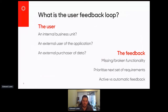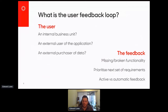So it's very important to identify initially who that user is. The second bit is around what is 'feedback.' There's clearly missing or broken functionality — that's quite obvious. The next set of requirements of what needs to be worked on in the roadmap. But the third point I want to highlight is that feedback actually has two different types: active versus automatic.